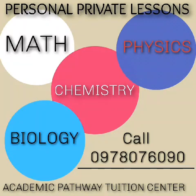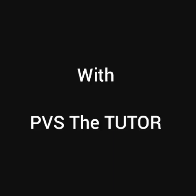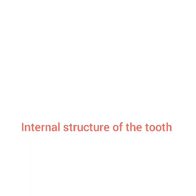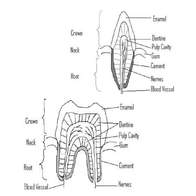Hello, welcome. Today is a continuation where we look at the internal structure of the tooth. The tooth is made up of enamel, dentine, pulp cavity, cement, nerves, as well as blood vessels.